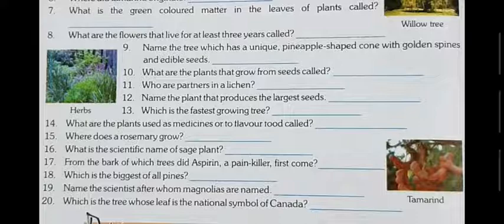Question number nine: name the tree which has a unique pineapple-shaped cone with golden spines and edible seeds. The answer is Monkey Puzzle — M-O-N-K-E-Y P-U-Z-Z-L-E. This tree has a pineapple-shaped cone with golden spines and the seed is edible. Question ten: what are the plants that grow from seeds called? Those plants are termed seed plants.